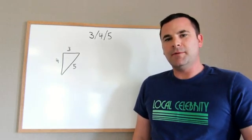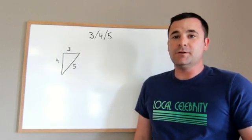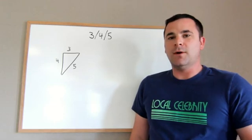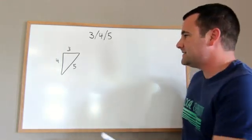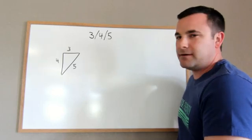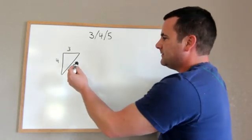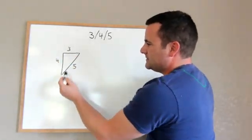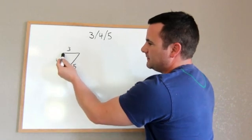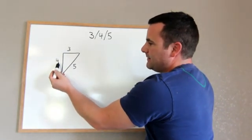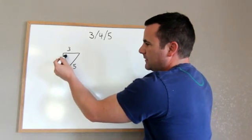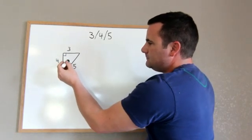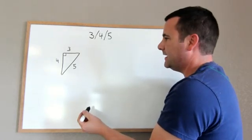I want to show you a method I use a lot to check for square, and I call it the 3-4-5 rule. What that means is the sides of a triangle in increments of 3, 4, and 5 means that this corner is square.